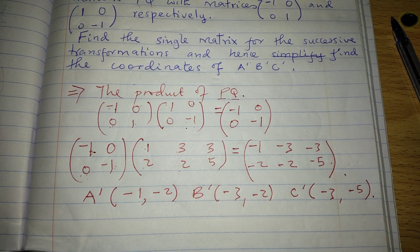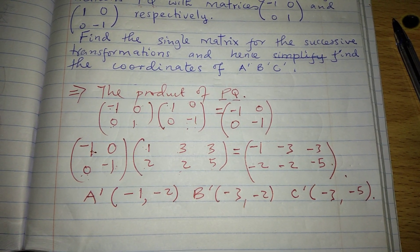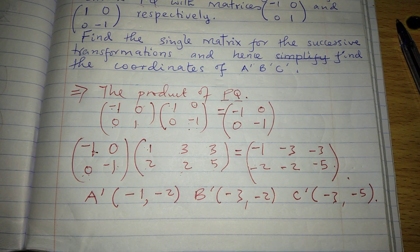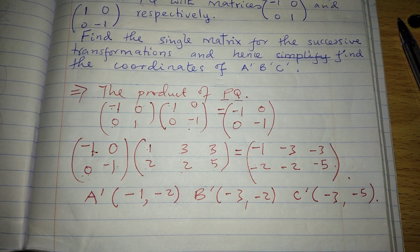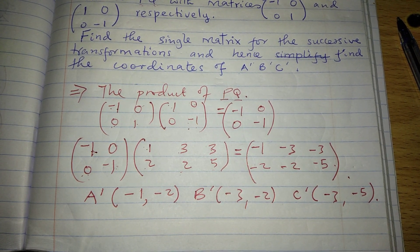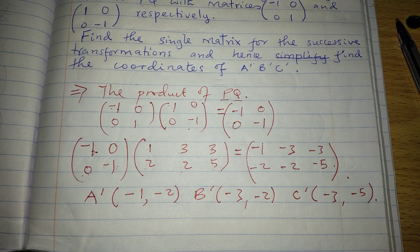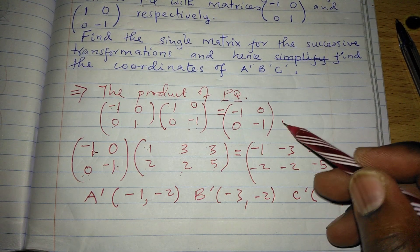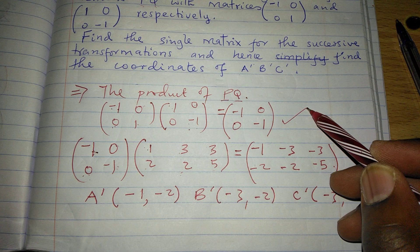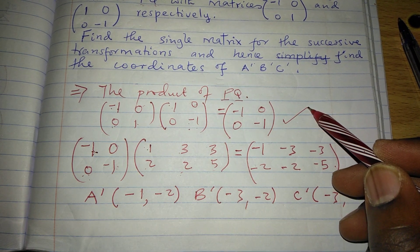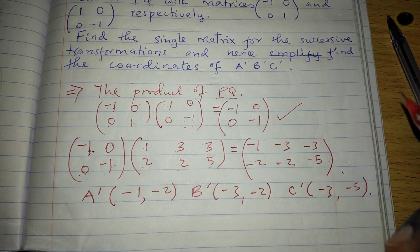So this is the answer we get when we perform the transformations successively. When finding a single matrix for successive transformations, we simply get the product of the two matrices involved in the successive transformations. Thank you for following.